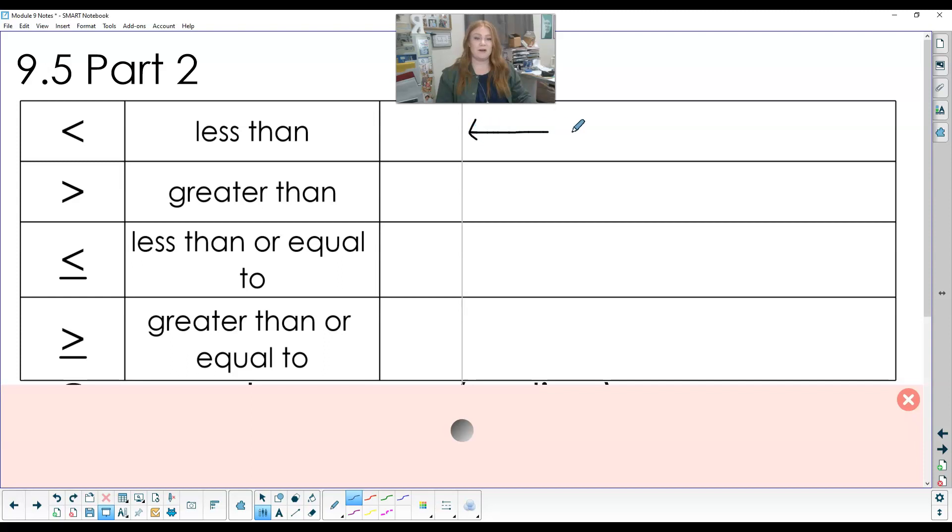So when we have something that is less than another number, we're going to have our number line. So just go ahead and draw a little number line with me and just make a mark on it. It doesn't really matter where. So when I'm saying something is less than, and it's just less than,